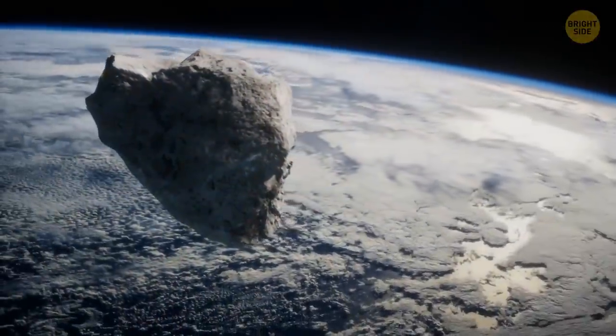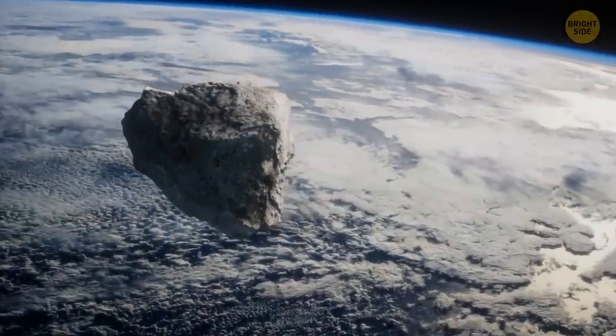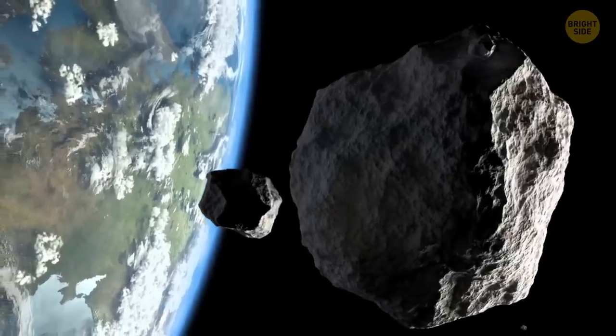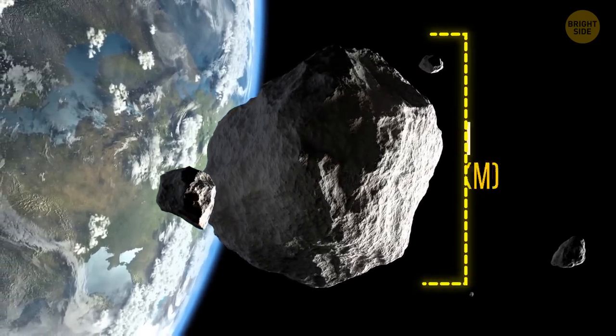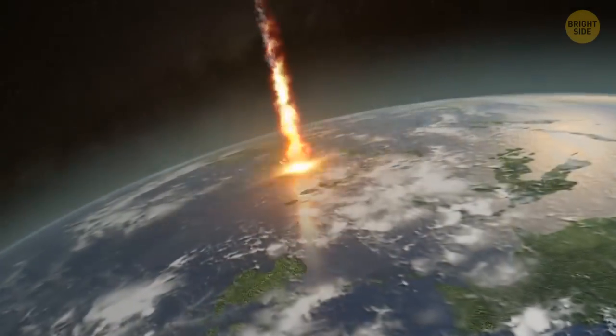But Bernardinelli Bernstein is too far away from the Sun to start heating up. This means that its surface has a different composition. It might be solid carbon monoxide. This increases the luminosity of the comet. That's why it can be observed with telescopes on Earth. We can compare Bernardinelli Bernstein to the largest meteorite to ever fall on Earth. About 66 million years ago, our planet was hit by a meteorite about six miles wide.